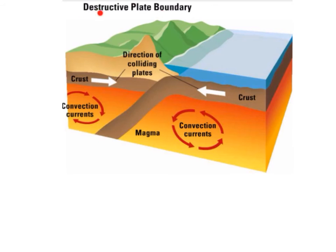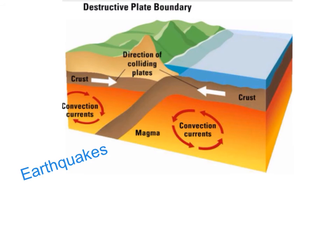In this diagram we have an example of a destructive plate boundary. The plates are moving towards and colliding with each other. The heavier plate gets pulled underneath the other one and sinks down into the mantle, where it melts. The lighter plate is buckled and folded upwards. This causes earthquakes and can result in fold mountains being formed. This type of plate boundary is known as a destructive plate boundary because the crust gets destroyed.